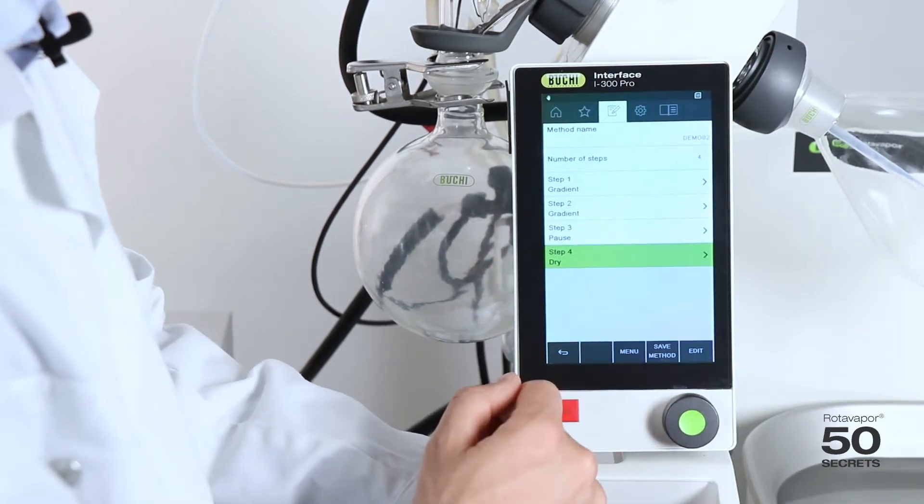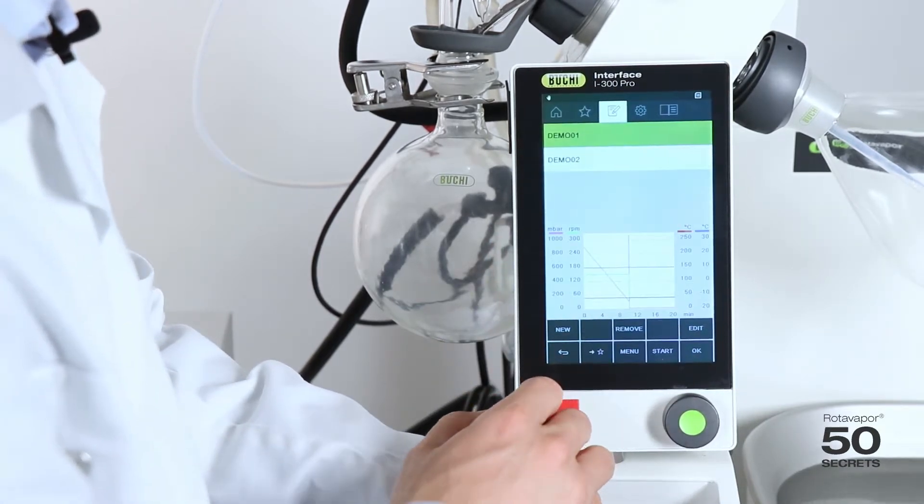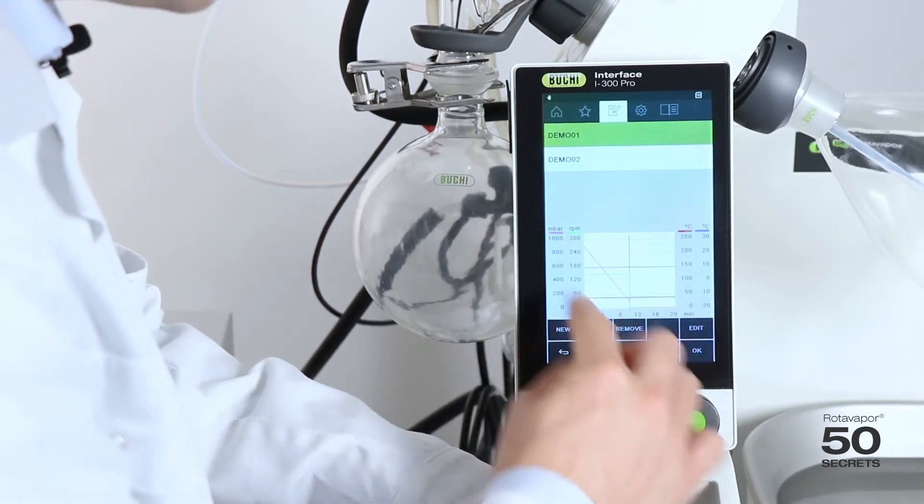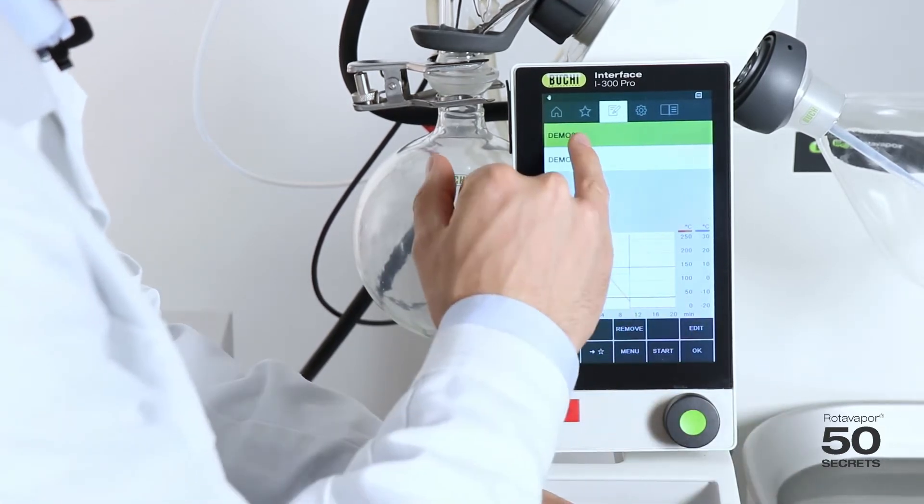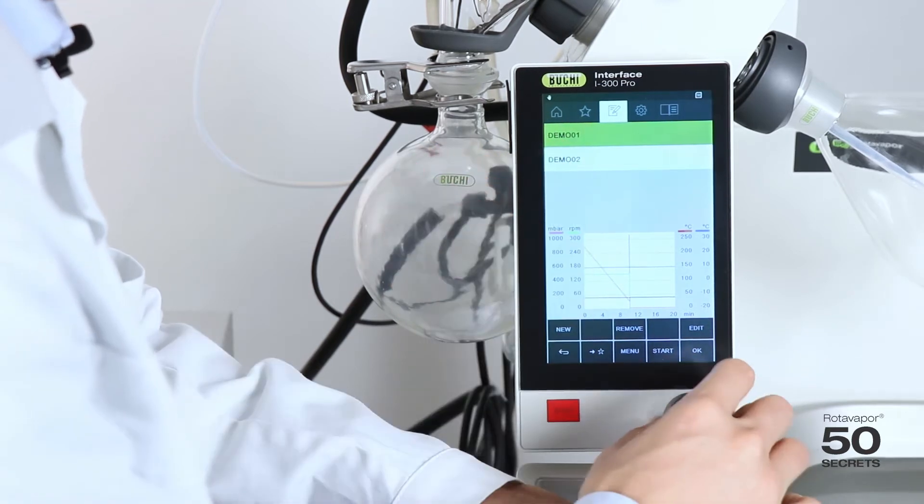So now we have created the whole method. We can save it. And now one thing we can see is over here we have already a preview. So we have demo1 and we switch to demo2, the method we've just created.